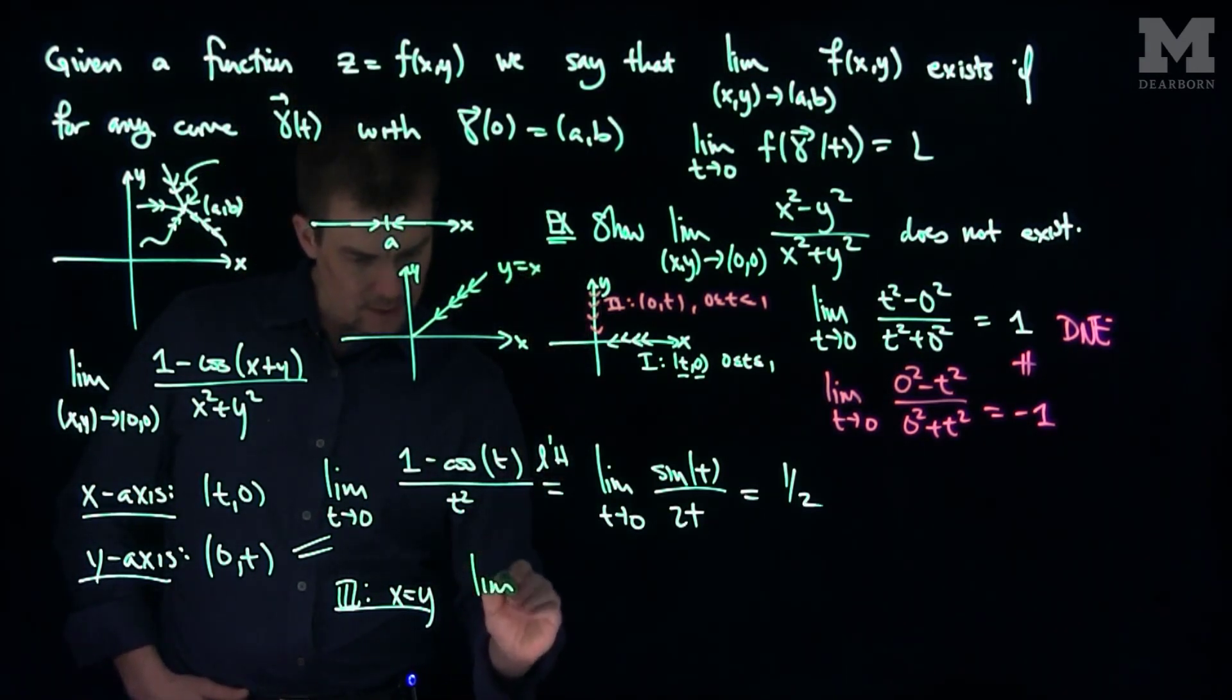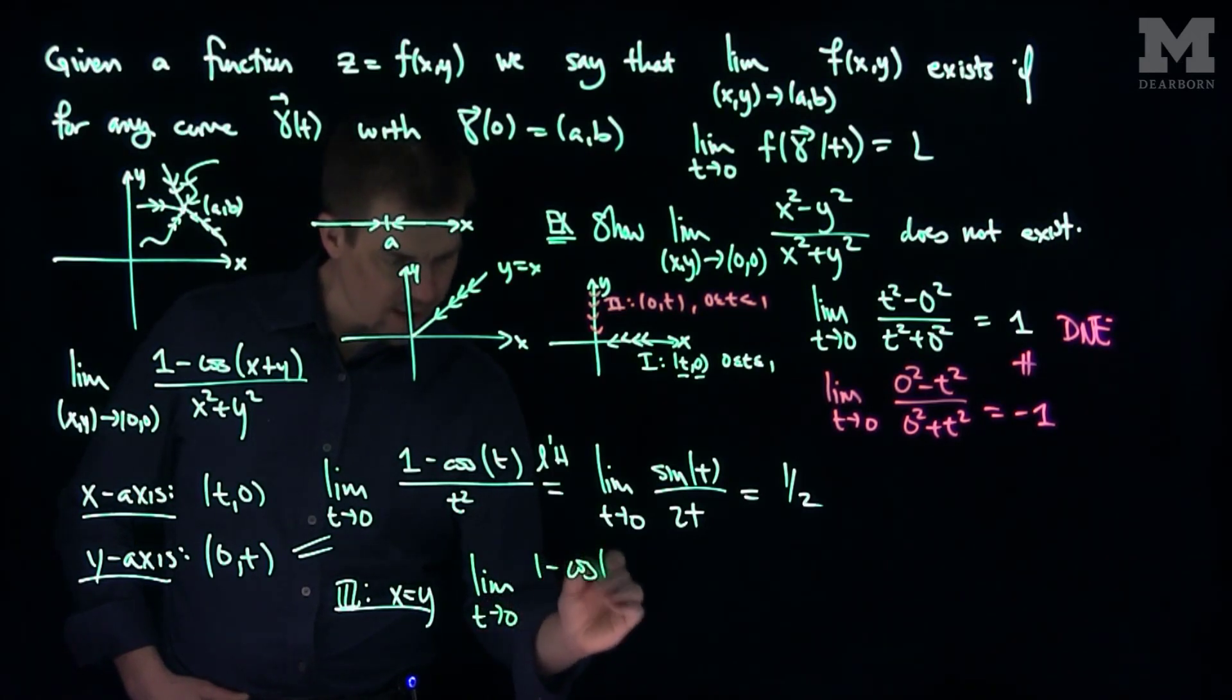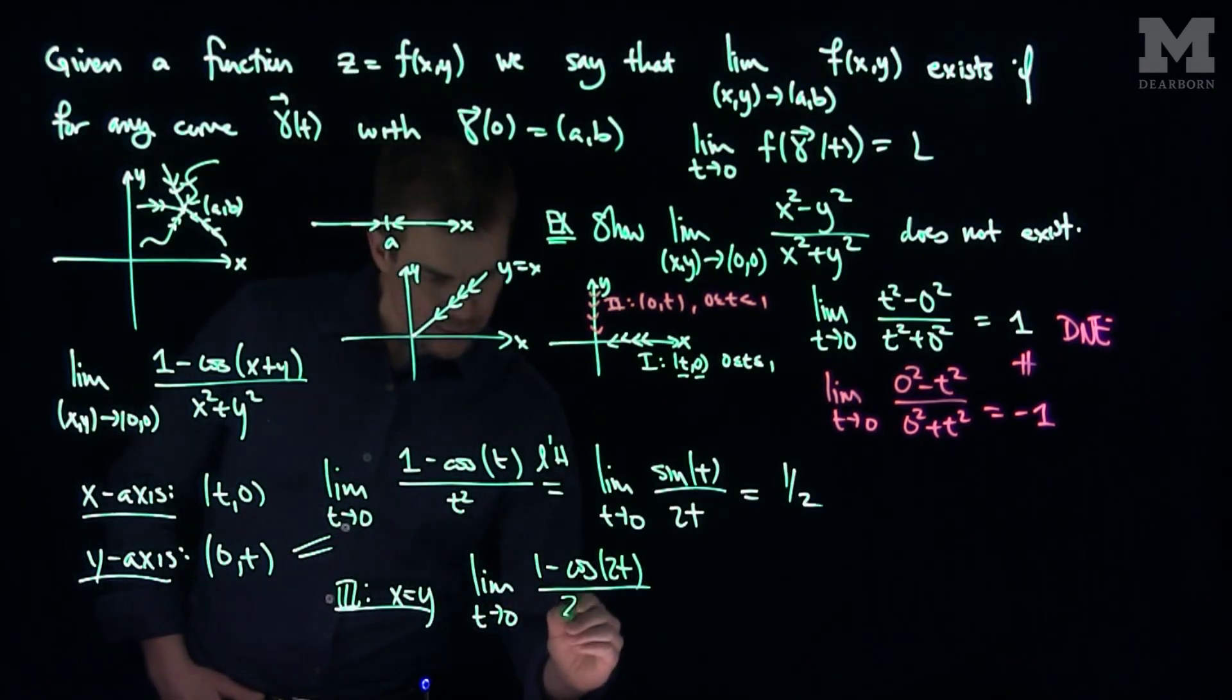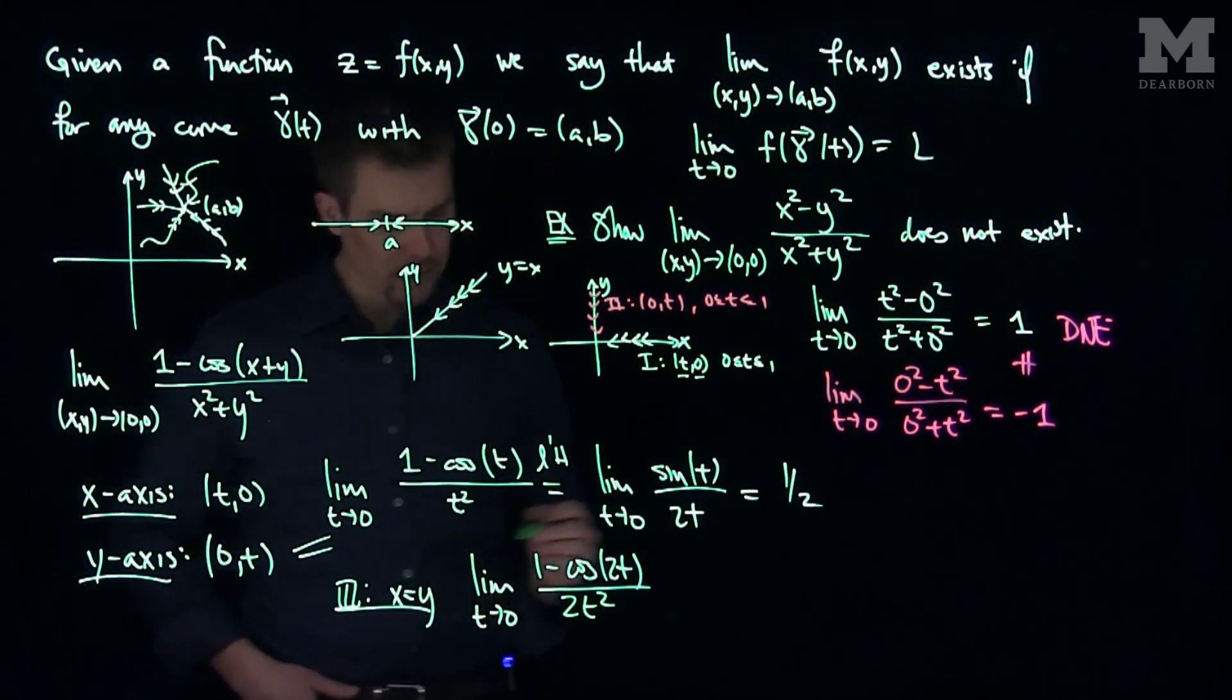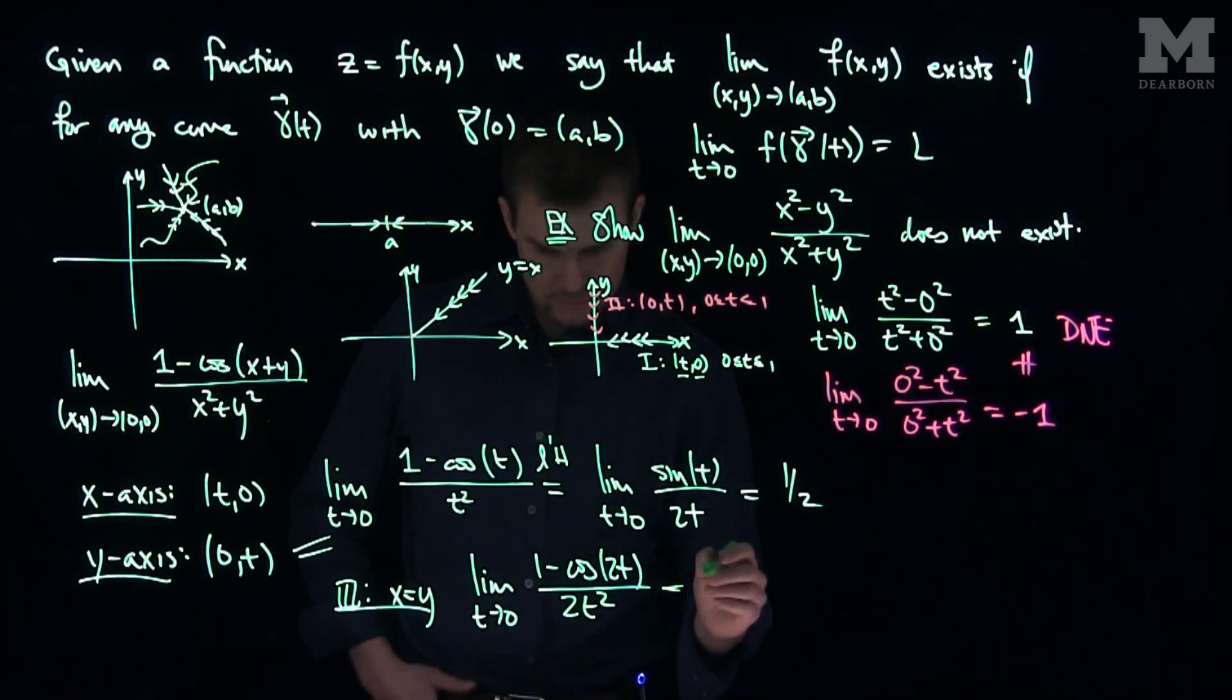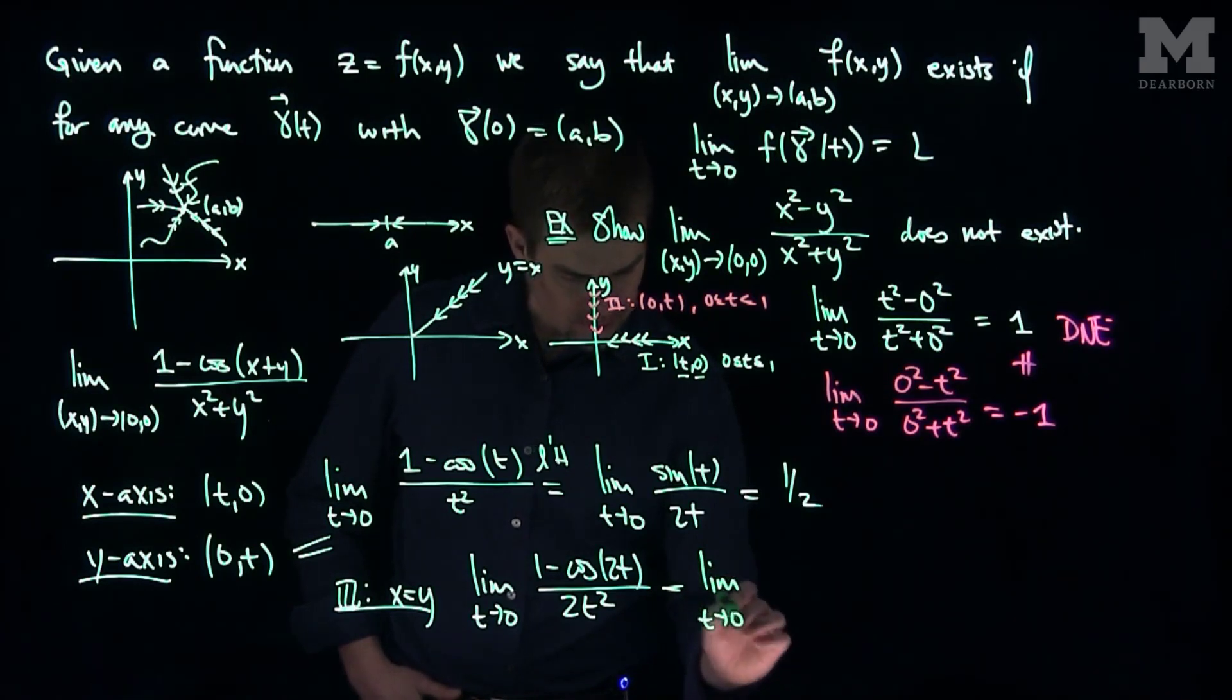You would have the limit as t goes to 0 of 1 minus the cosine of 2t over, then we'll have a 2t squared.